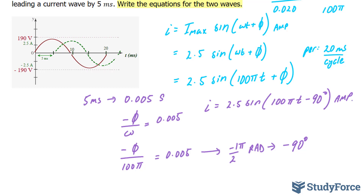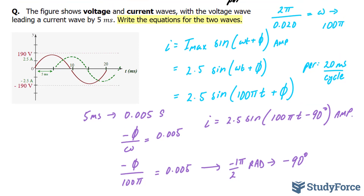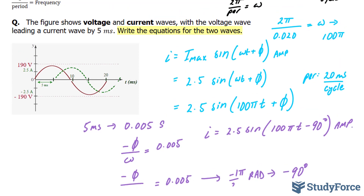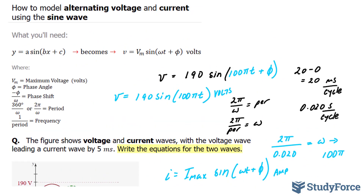And there you have it. That is how to model two sine waves into their respective functions representing alternating voltage and alternating current.